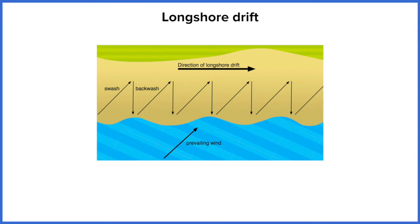So we have a diagram here that represents longshore drift and it's got quite a few different things going on. We've got quite a few different arrows. So we're going to try and step by step this by looking at each individual section on its own.